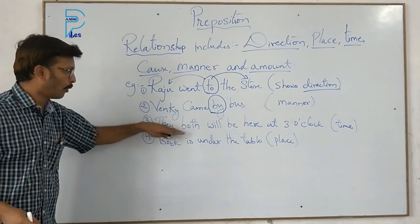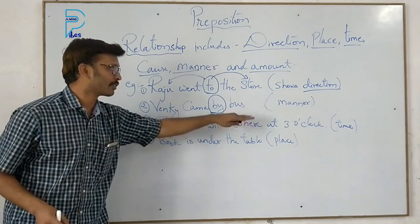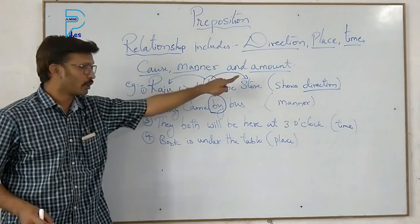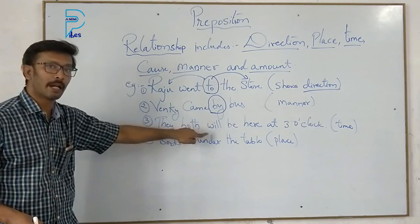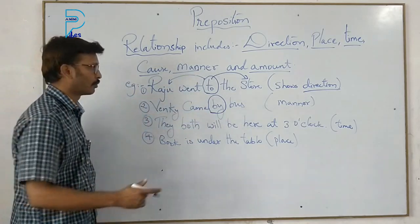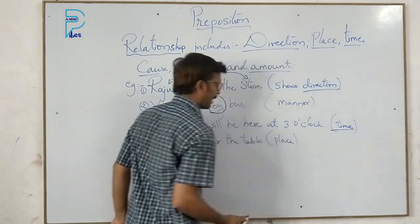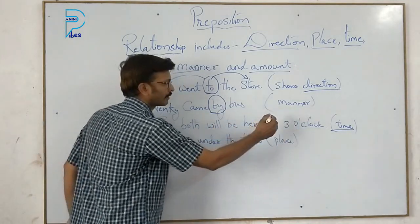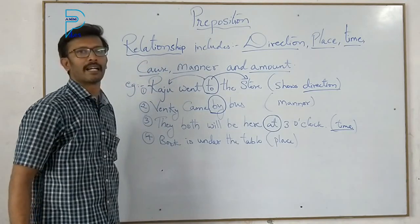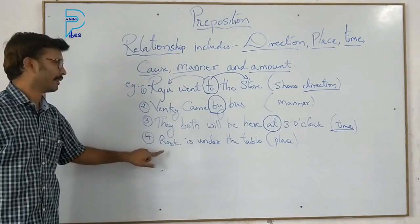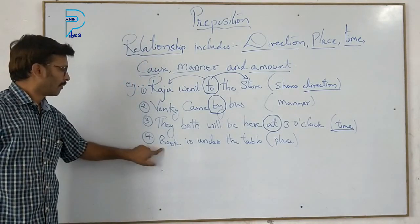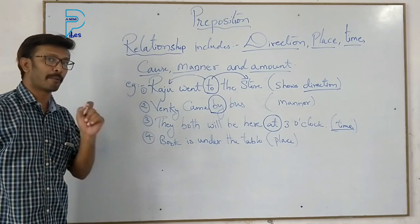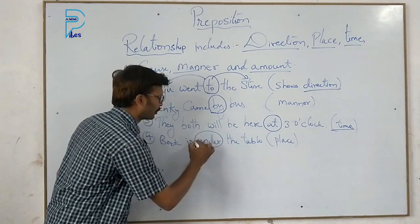Third example: 'They both will be here at three o'clock' — here the word 'at' is used for time. Fourth example: 'Book is under the table' — here 'under' is the preposition indicating place, telling us where the book is located.